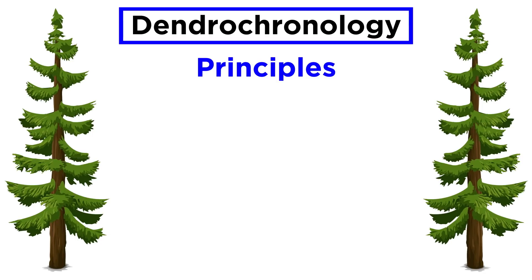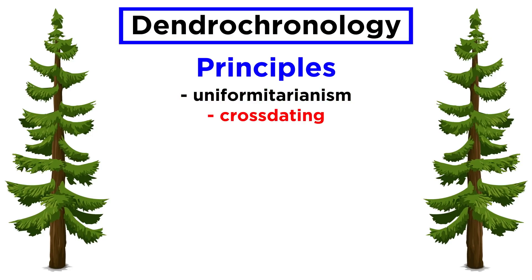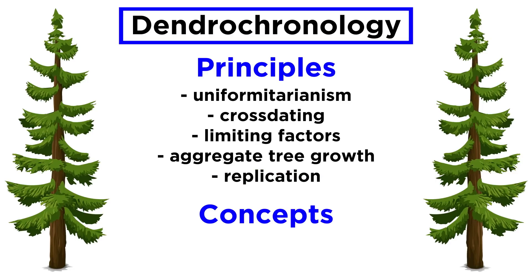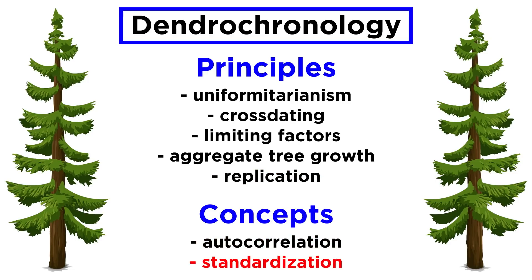In this tutorial we will cover five principles: uniformitarianism, cross-dating, limiting factors, aggregate tree growth, and replication. We will also cover two concepts: autocorrelation and standardization.